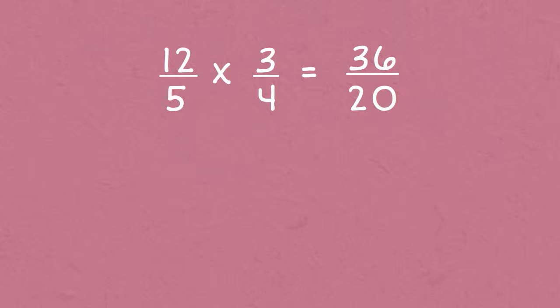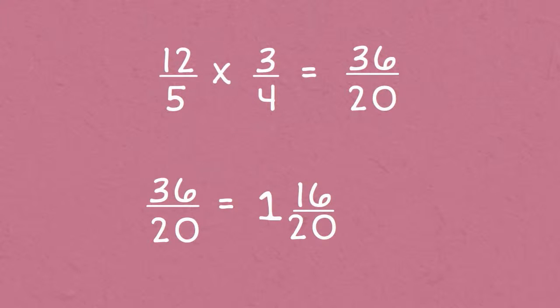We can now turn thirty-six-twentieths back into a mixed number by dividing thirty-six by twenty. And the answer we will get is one and sixteen-twentieths.